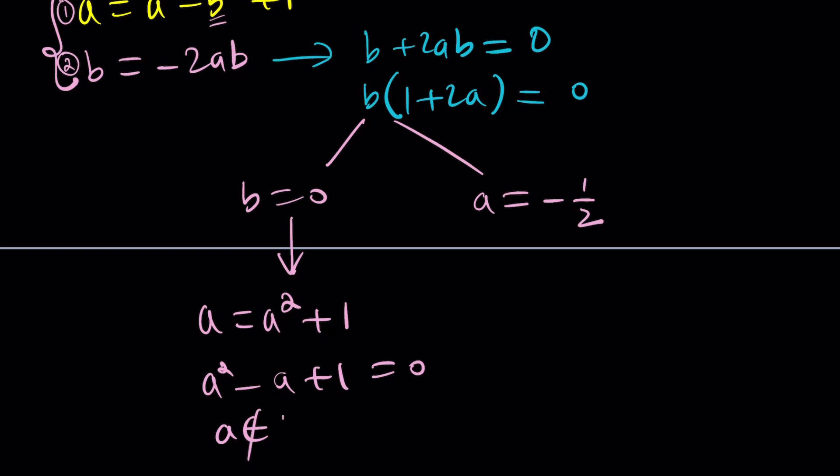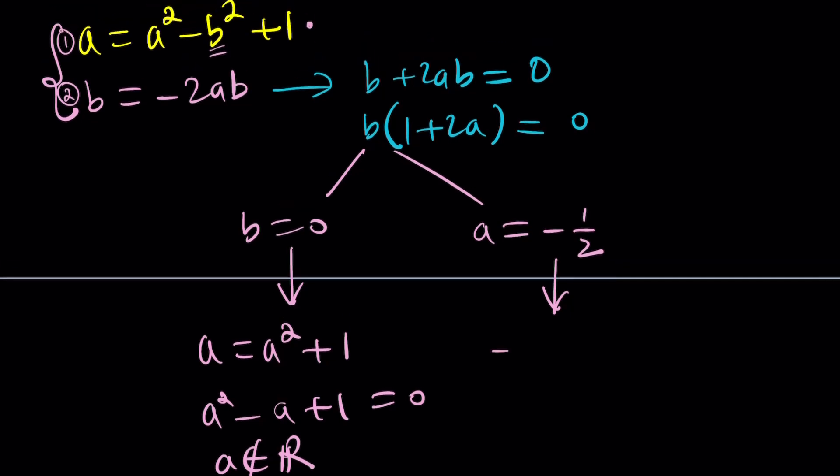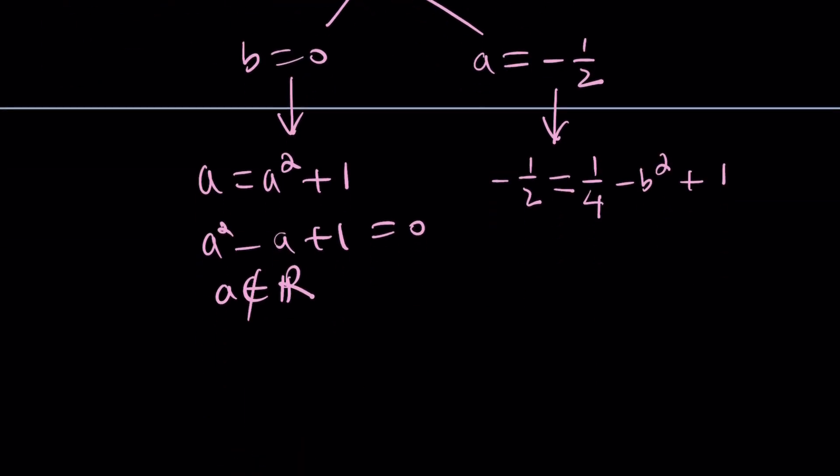This one doesn't have any real solutions. So since A is not a real number and A and B have to be real numbers, we're not going to be able to take that solution. So B equals 0 dies and we have to go with this. If A is equal to negative 1 half what happens? Let's find out by substitution. So negative 1 half equals negative 1 half squared which is 1 fourth minus B squared, minus B squared plus 1. Now let's isolate B squared. 1 plus 1 fourth plus 1 half is going to be 7 fourths.